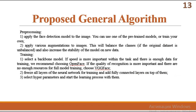The proposed general algorithm can be formulated as follows. During the preprocessing stage, apply the face detection model to the image. Next, apply various augmentation to images. During the training stage, select a backbone model. If speed is more important within the task and there is enough data for training, we recommend choosing OpenFace. If the quality of recognition is more important and there are not enough resources for full model training, choose VGGFace. Choose all layers of the network for training and add fully connected layers on top of them. Select hyperparameters and start the learning process.